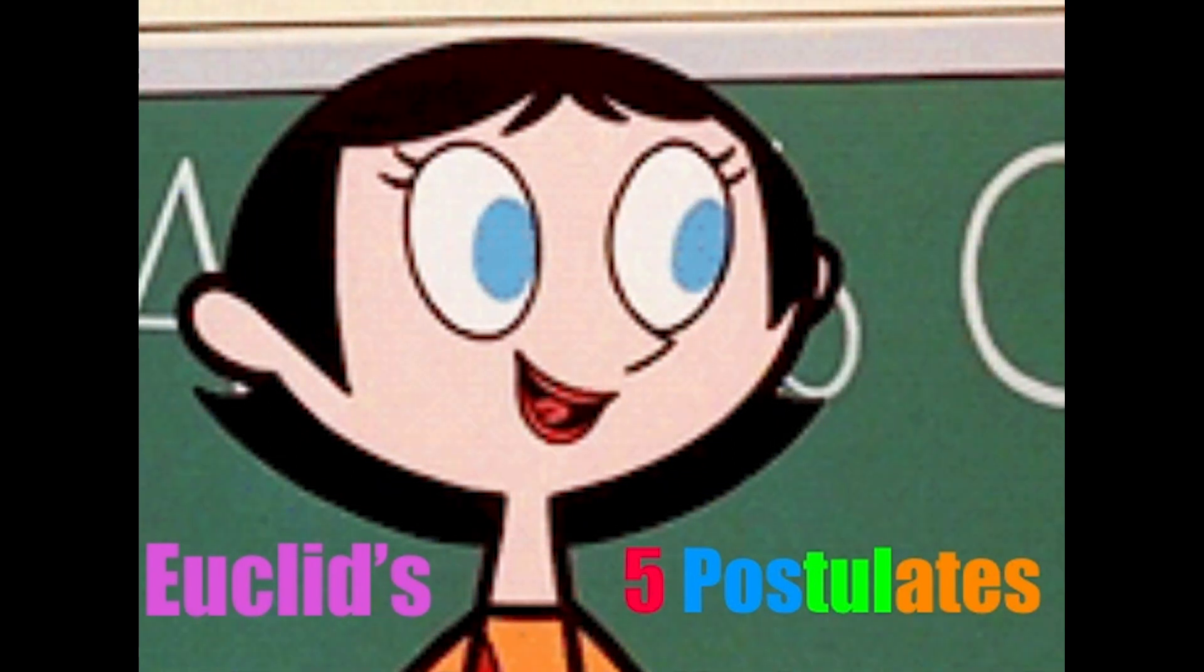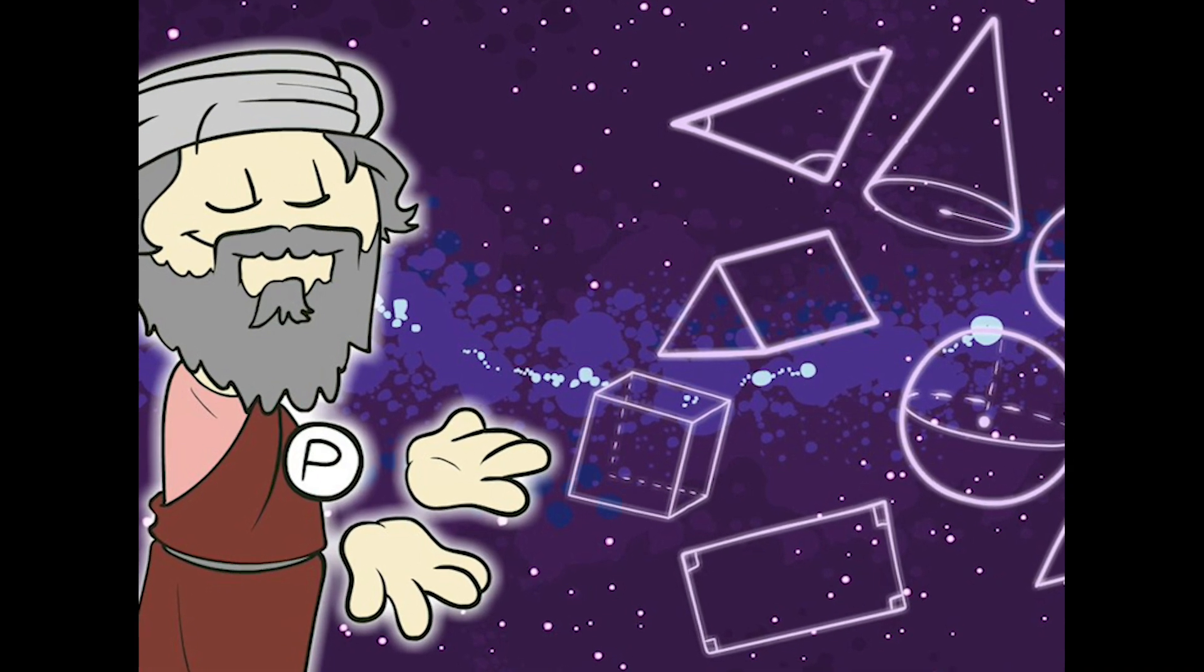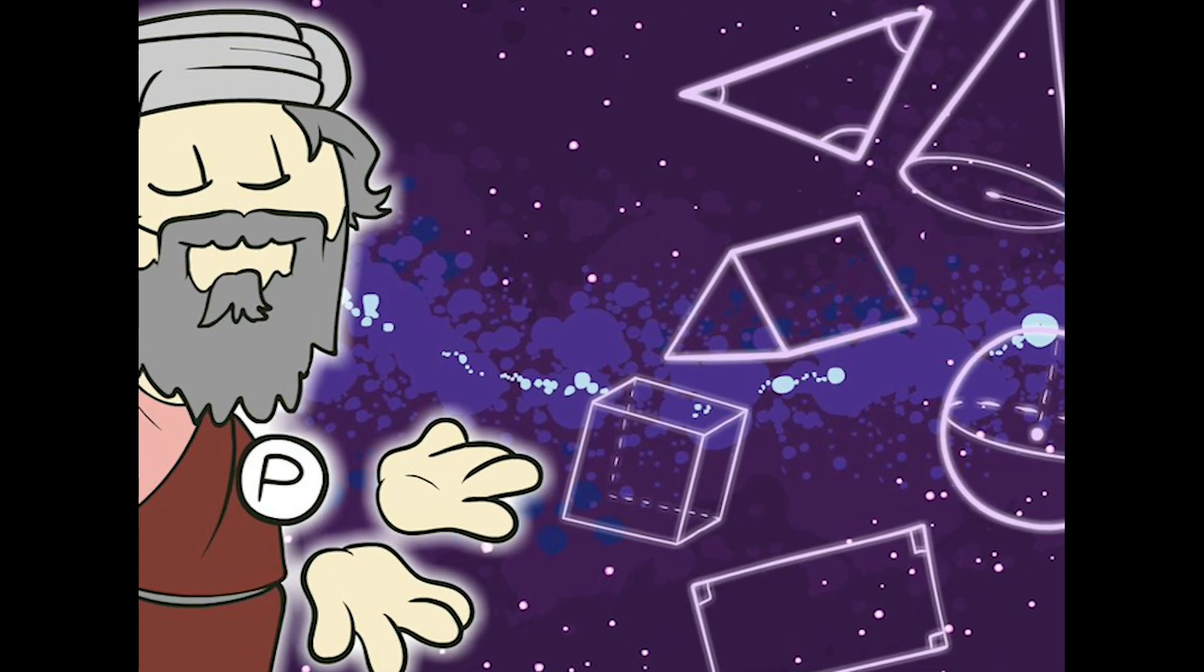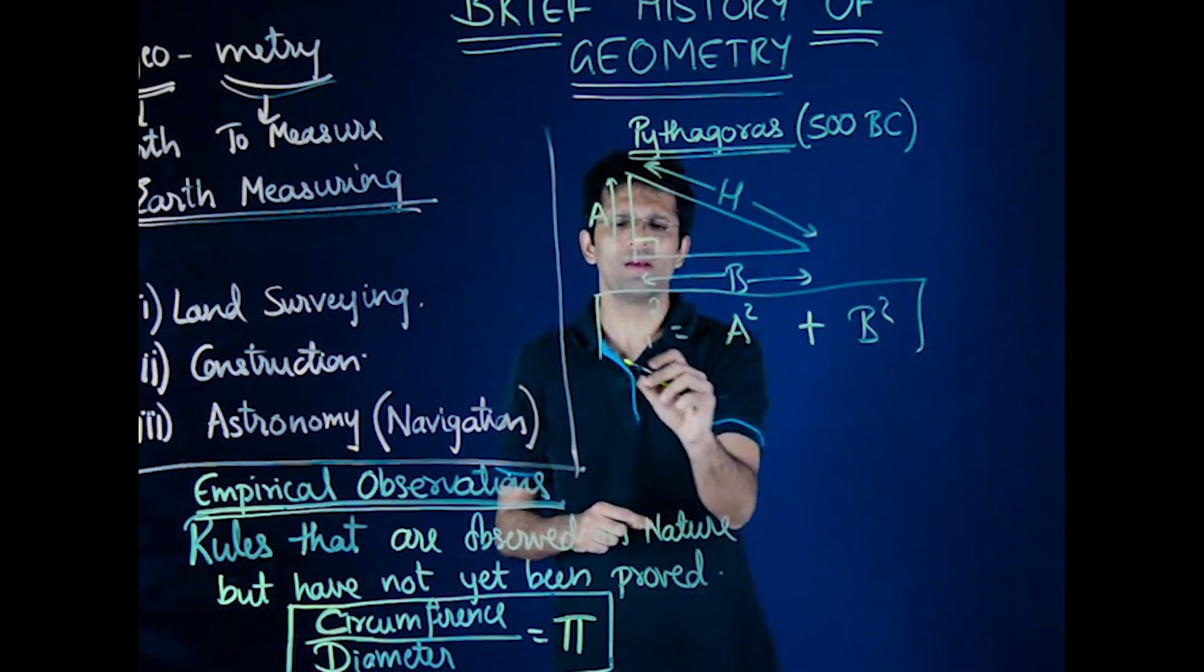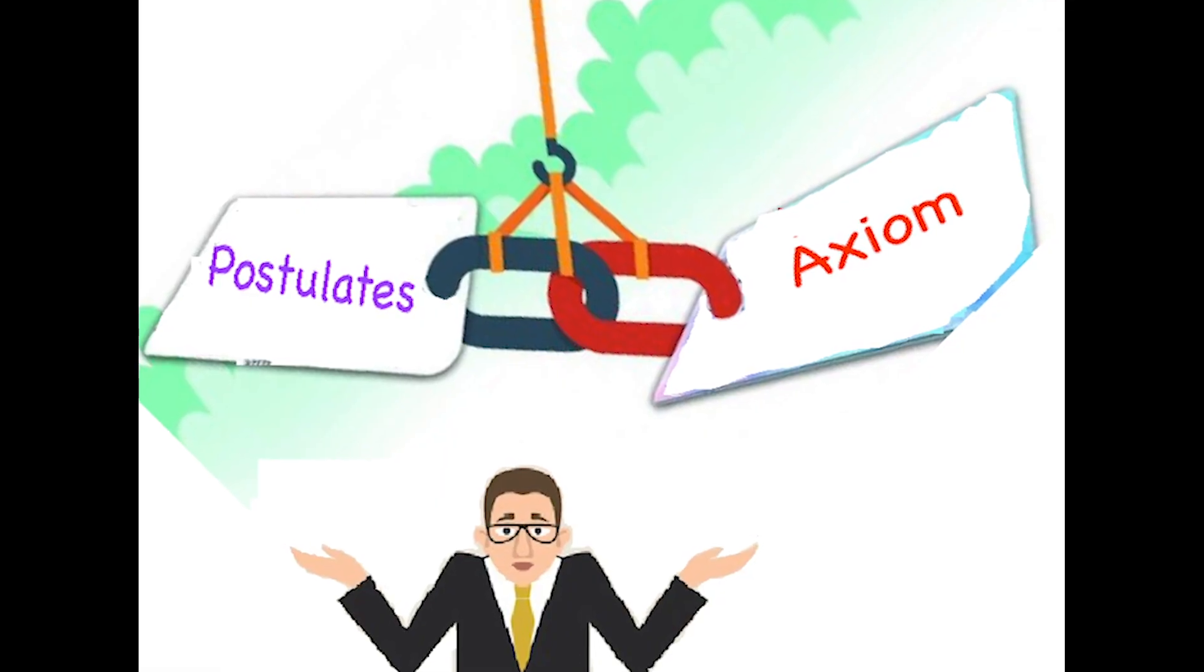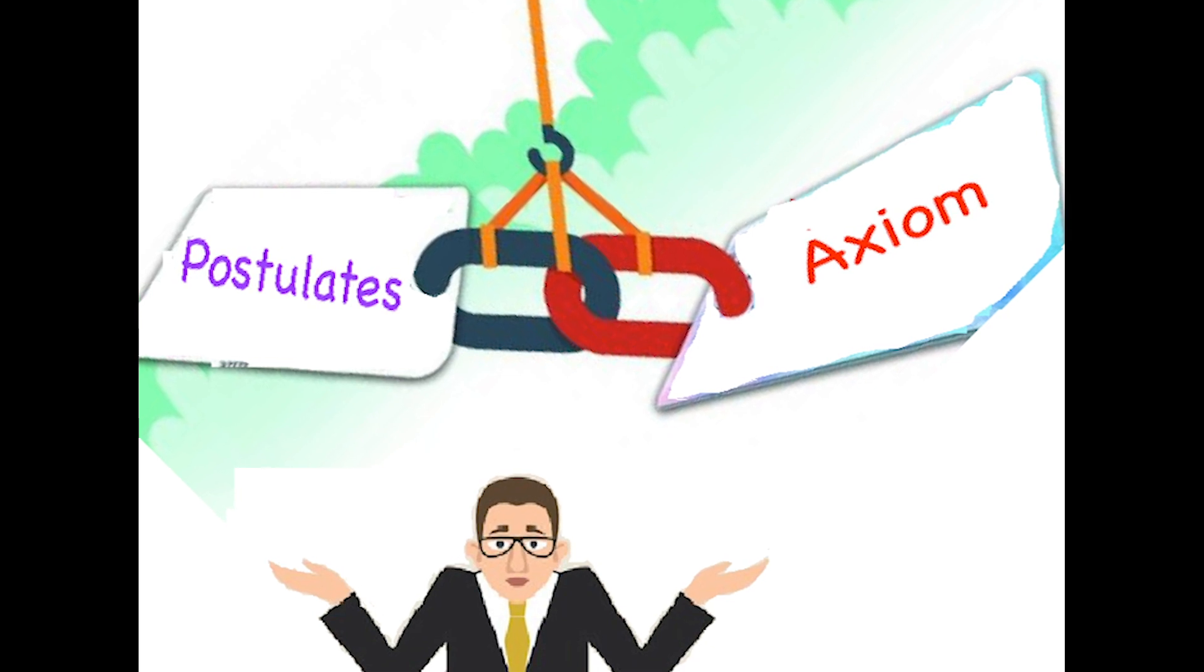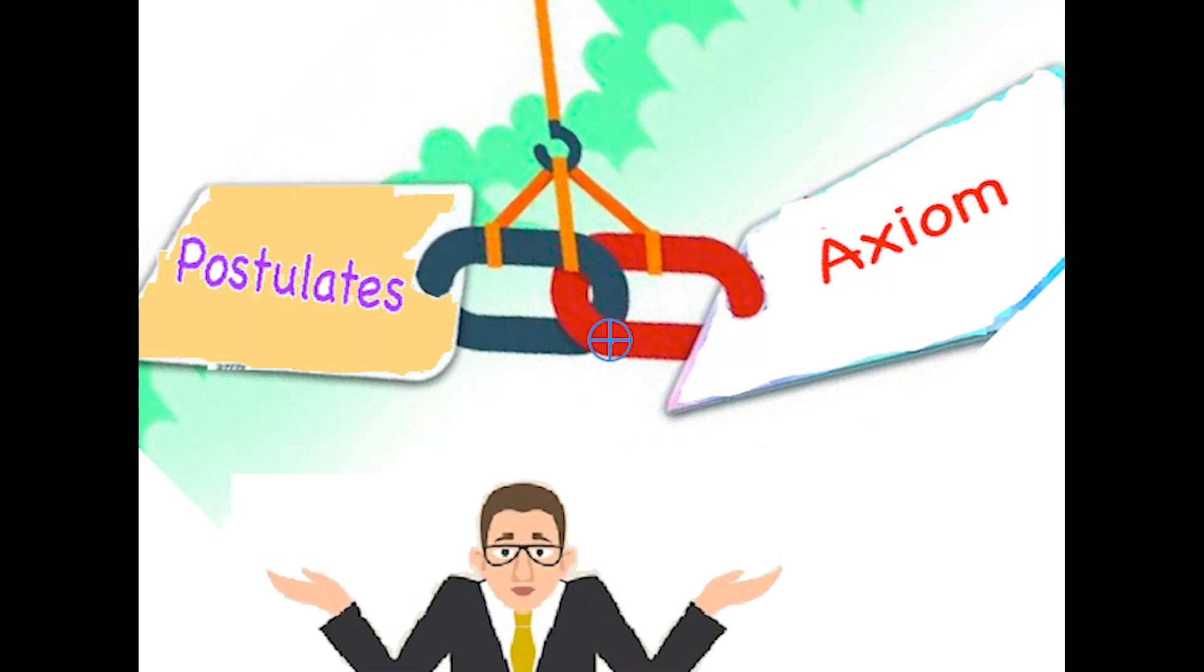Hello friends, it's time to learn Euclid's five postulates. Now all of you know that axioms and postulates are universal truths accepted by mathematicians. Today, postulates and axioms are used interchangeably.